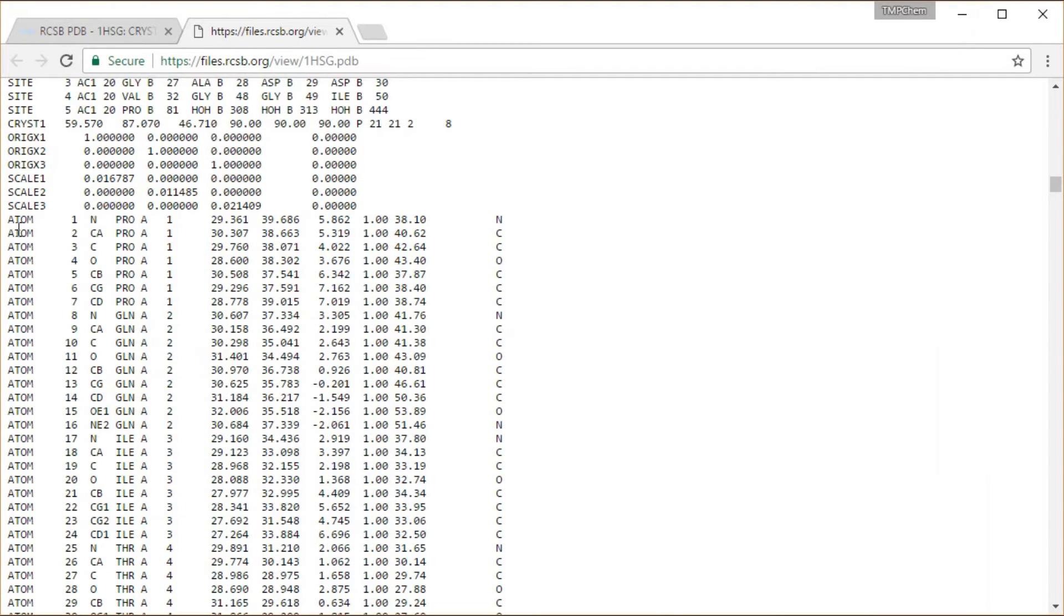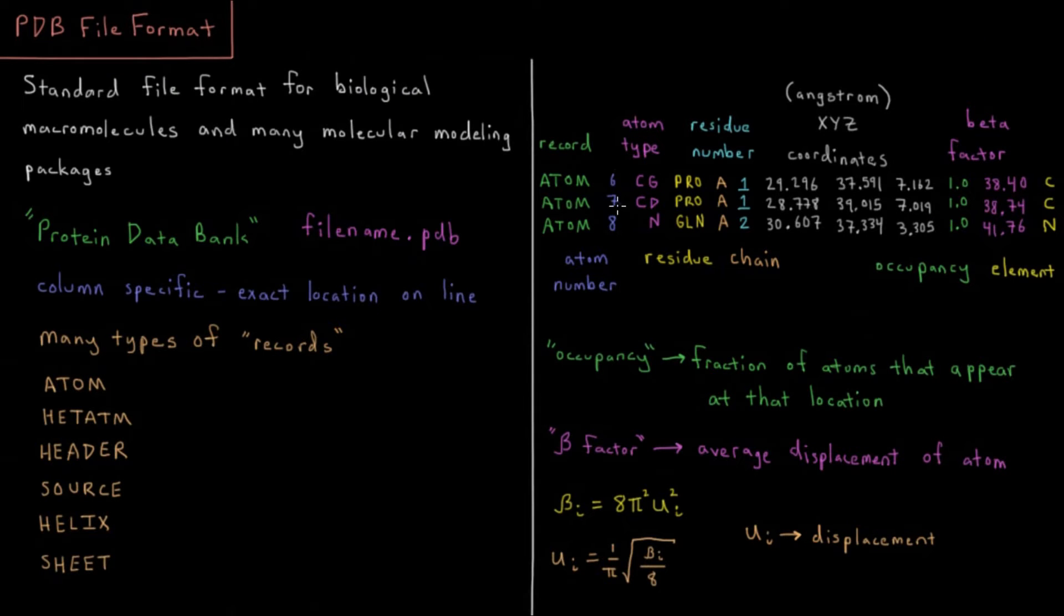What is it that the program is being told by each of these atom records? We have the second column being the atom number starting from 1 and going up from there. The third column, the atom type. What type of atom is this?